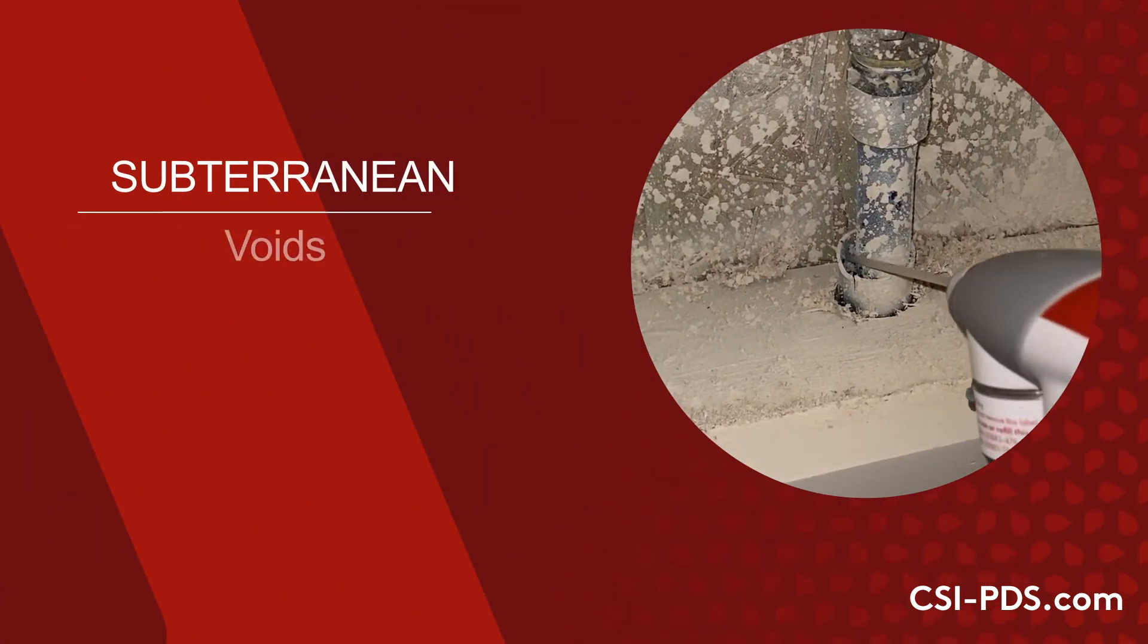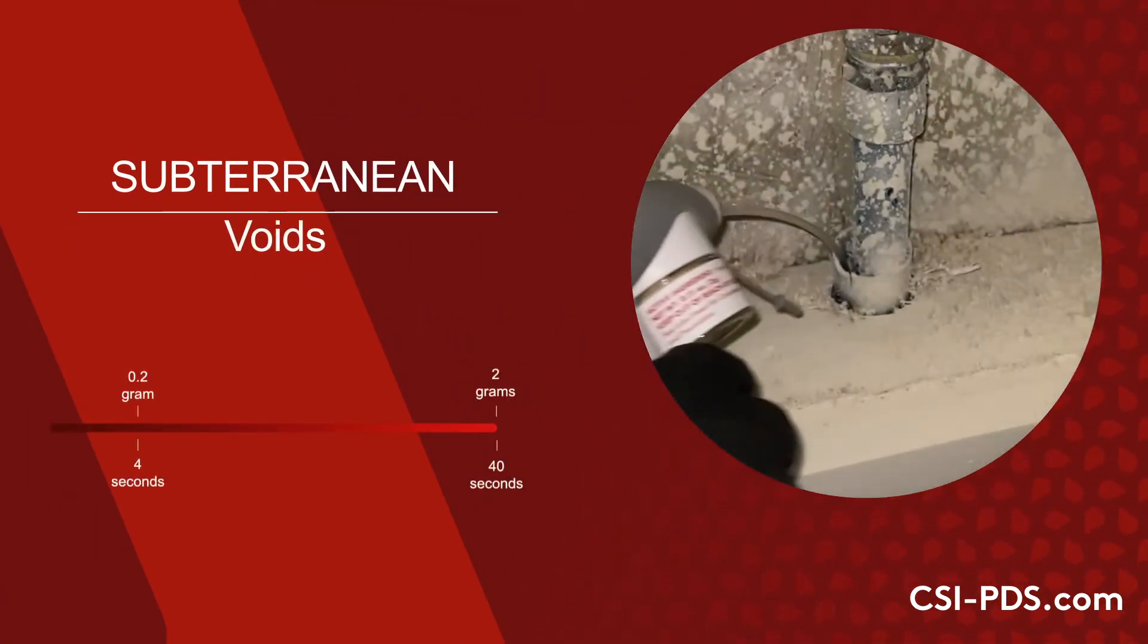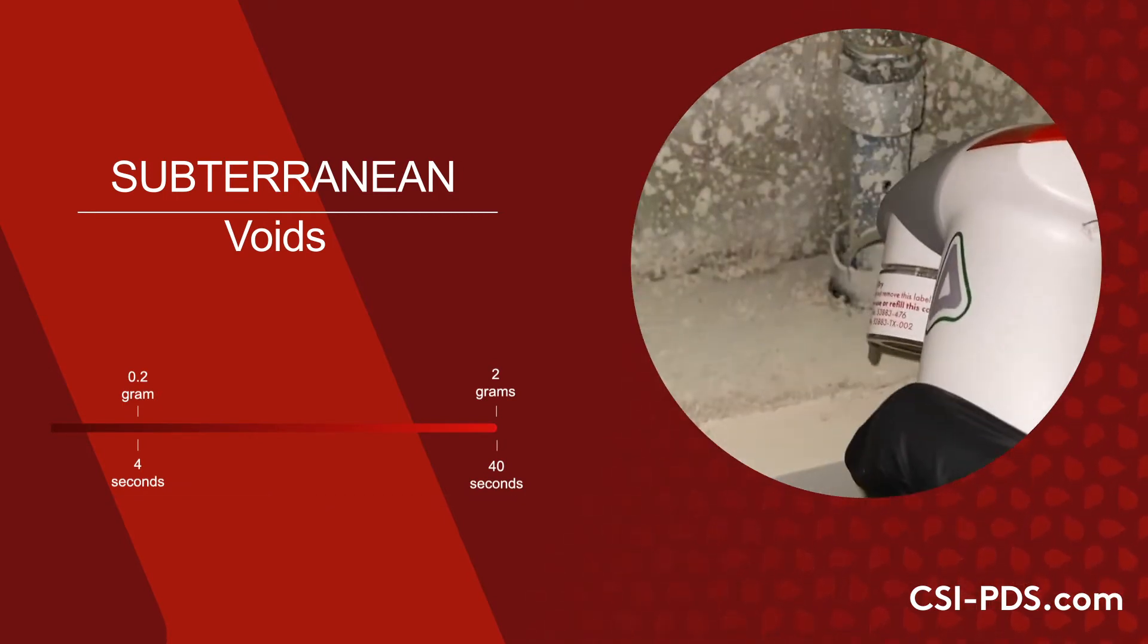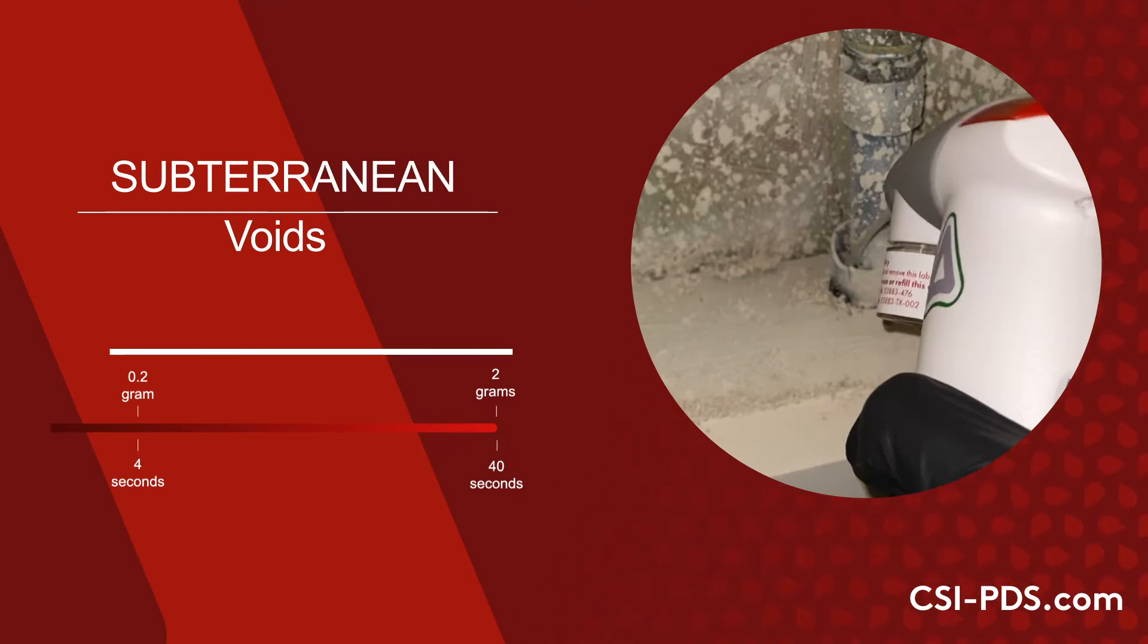When treating voids that subterranean termites might infest, use a 4 to 40 second trigger actuation time to apply between 0.2 and 2 grams of Taurus Dry.